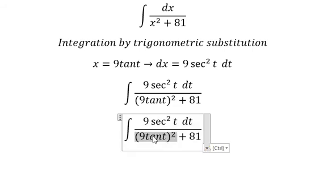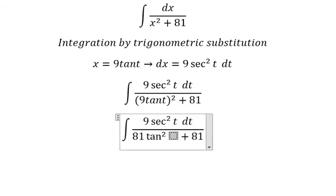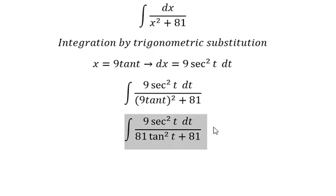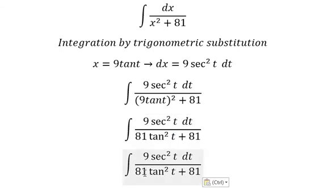This one you got about 81 times t square. We have 81, 81, we can do factorization.